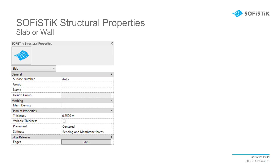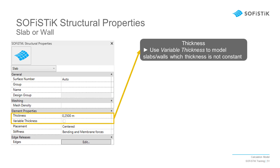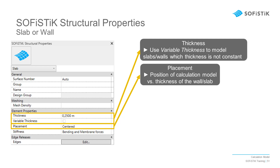For surface elements, such as walls and slabs, we have different properties. Surface elements can be defined with a varying thickness. In that case, you can override the geometry and set the thickness yourself for each edge of the element. An additional window will then pop up to allow the setting for each edge, while the corresponding edge will be highlighted in the model. Sophistic will automatically create a calculation model with such variation.